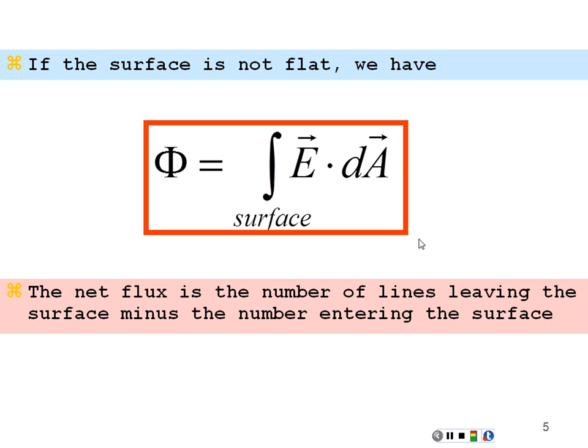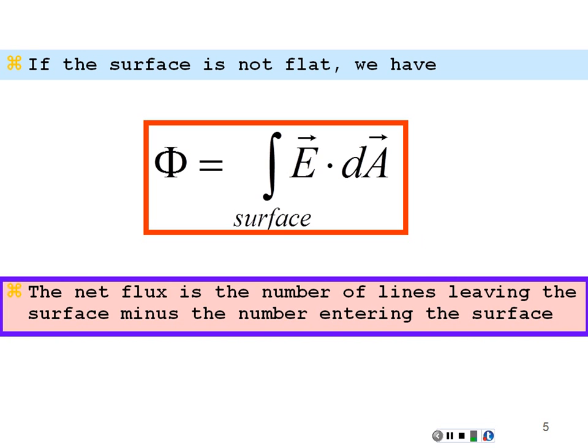The net flux is the number of lines that leave the surface minus the number that enter a surface. Flux that is leaving a surface is positive — it's directly in line with the outward area vector on that surface. Flux that's going into a surface is negative because the outward area vector is always in the opposite direction. So flux going in is negative, flux going out is positive, and the difference is your net flux through a surface.